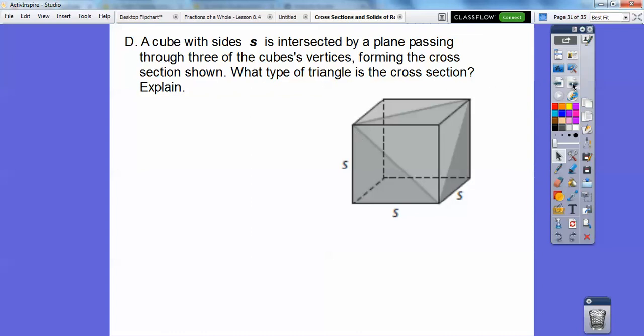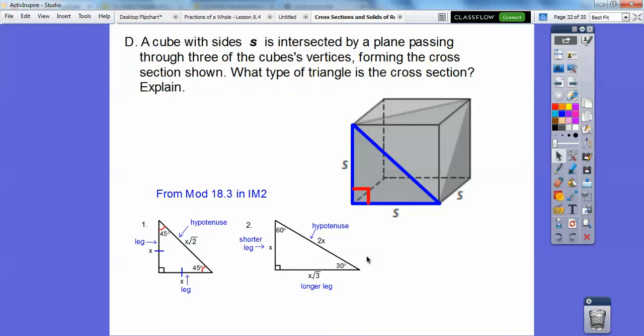This is S by S by blank. We can use the Pythagorean theorem, or we can remember our formulas from IM2, Integrated Math 2. From Module 18-3 in IM2, you can go to MrMathBlog.com and check it out. If we have an isosceles triangle, S by S, or X by X, the hypotenuse is going to be S root 2, or X root 2. That's this guy. So this is S root 2. Similarly, this is S root 2, because it's a cube. This is S, this is S. Similarly, this is S, this is S. So it's S root 2.